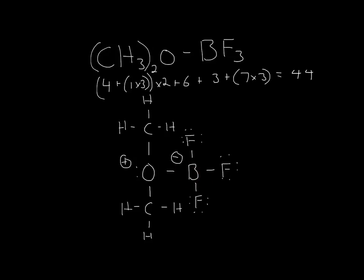Boron is in group 3, so it should have a number of 3. But, if we count it, 1, 2, 3, 4, so 3 minus 4 would be negative 1. That's why it has a negative charge.